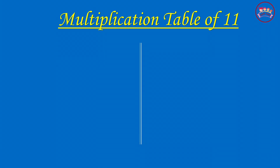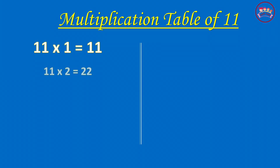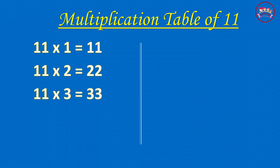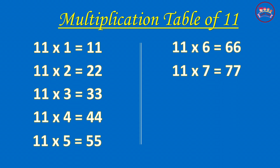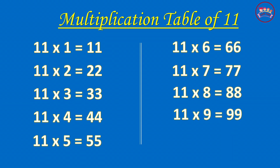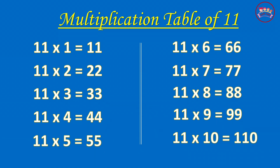Multiplication Table of 11. 11-1 is 11, 11-2 is 22, 11-3 is 33, 11-4 is 44, 11-5 is 55, 11-6 is 66, 11-7 is 77, 11-8 is 88, 11-9 is 99, 11-10 is 110.